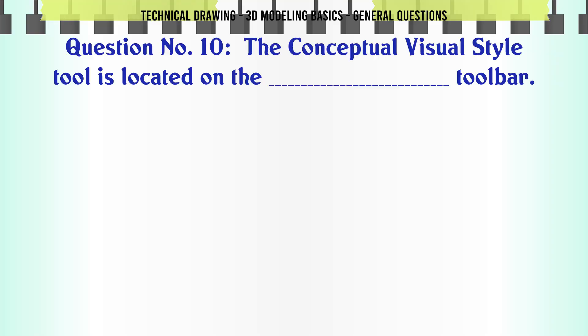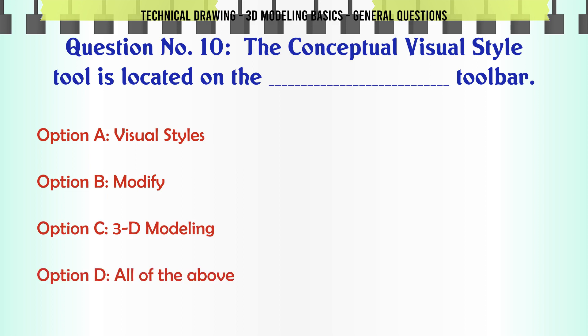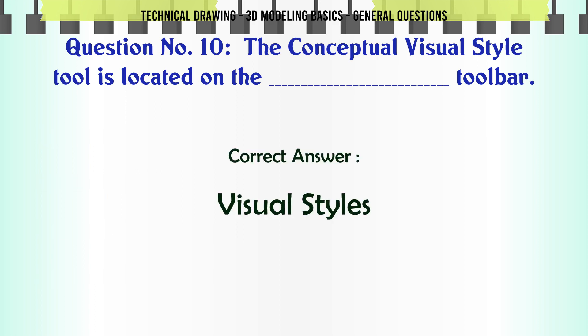The conceptual visual style tool is located on the toolbar. A. Visual styles. B. Modify. C. 3D modeling. D. All of the above. The correct answer is visual styles.